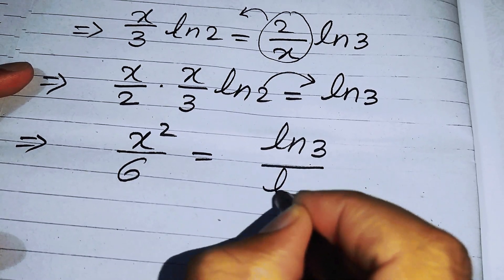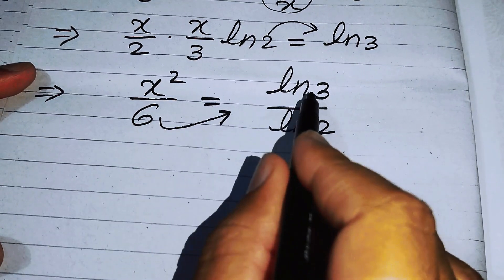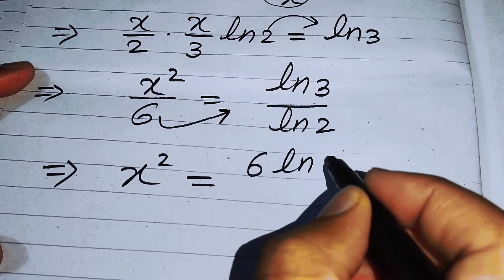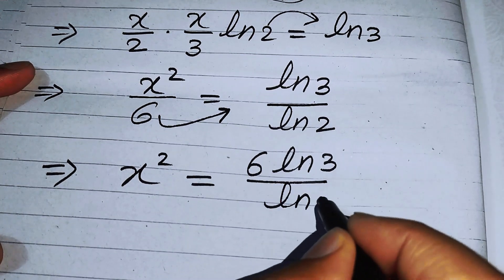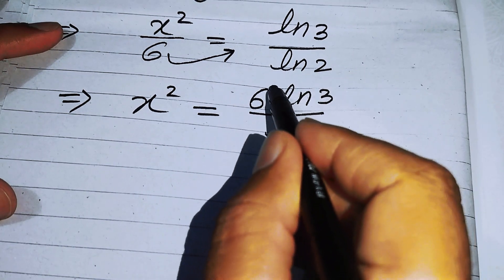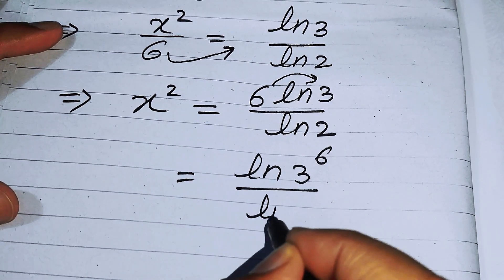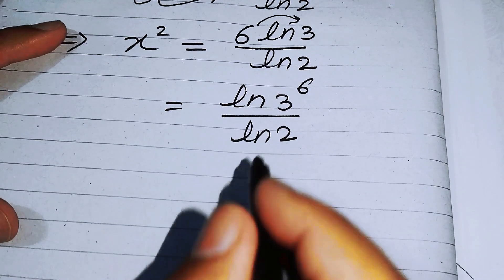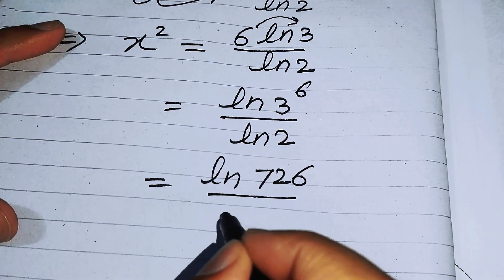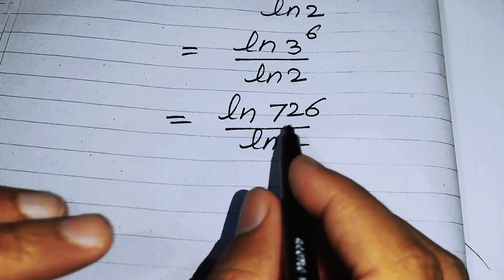We move the 6 to the right hand side, where it multiplies the term, so we get x squared equals 6 times log 3 over log 2. Applying the log property, we take 6 as the exponent and write this as log of 3 to the power of 6 over log 2. Since 3 to the power of 6 equals 729, this becomes log of 729 over log 2.